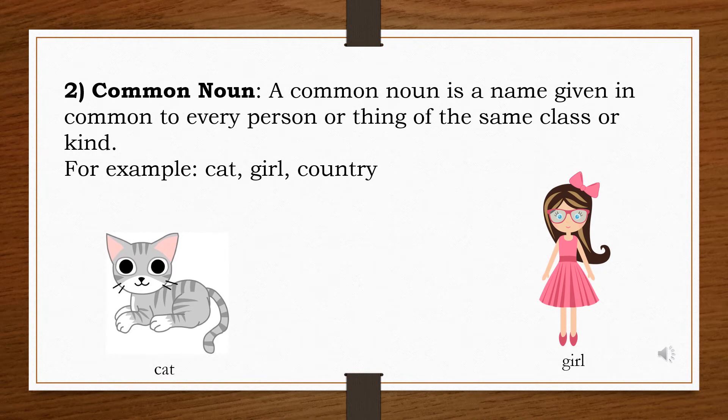The second kind of noun which we shall discuss is the common noun. A common noun is a name given in common to every person or thing of the same class or kind. For example, a cat is known as a cat — let it be any cat. Similarly, a girl is called a girl — she may be any girl. See the examples.